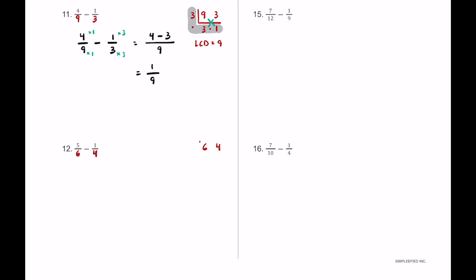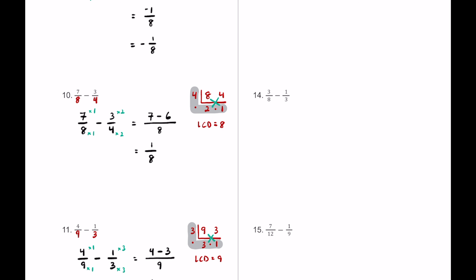For number twelve we have five-sixths minus one-fourth — sixths and fourths. Six and four are both even so two is a common factor: two times three is six, two times two is four, and three and two have nothing else in common. Two times three is six, six times two is twelve — so the LCD is twelve. Five times two is ten, one times three is three, so ten minus three equals seven — giving seven-twelfths.